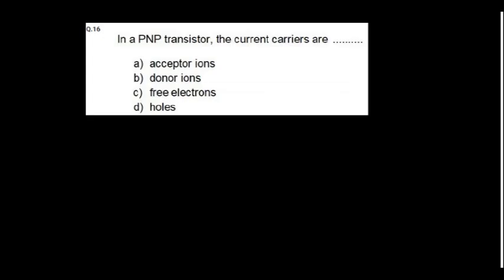In a PNP transistor, the current carriers are holes. NPN it is electrons.